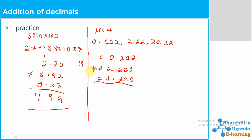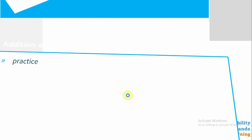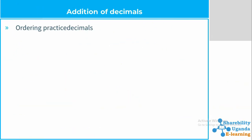Now we add. Here we get 6, then also 6. We put a point, then we get 4 and then 2. So that is how we can solve that number.